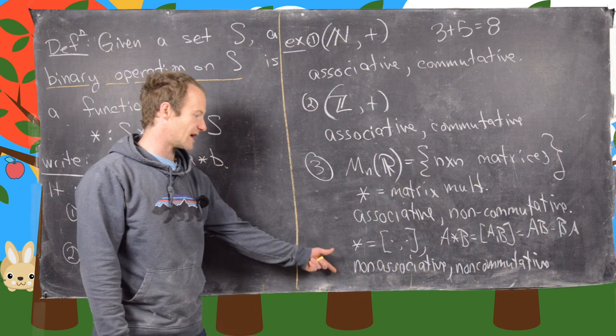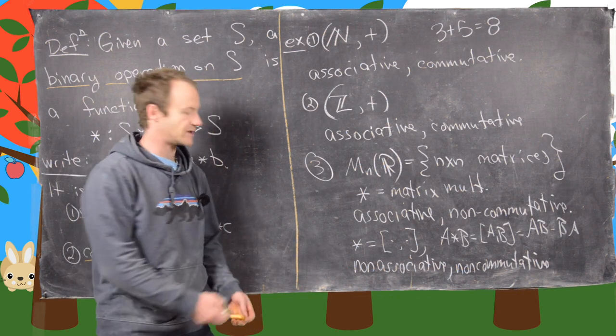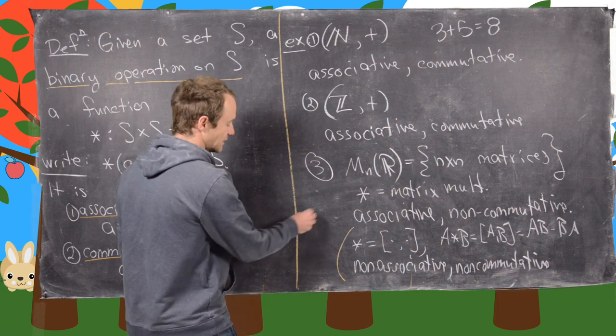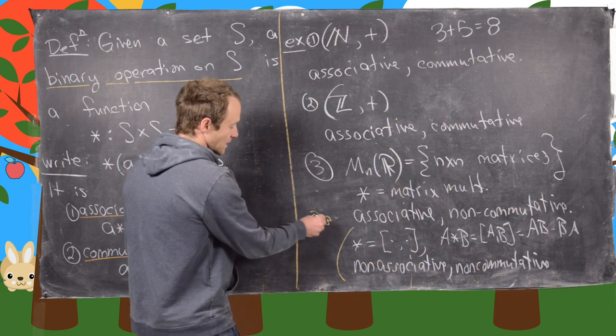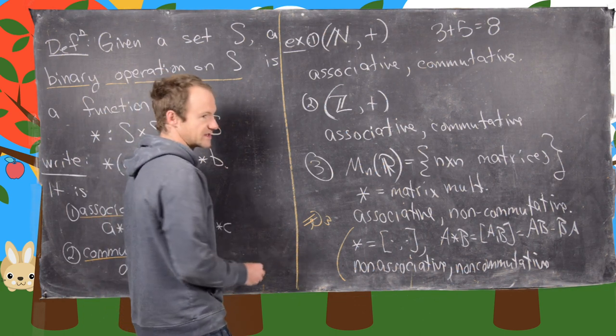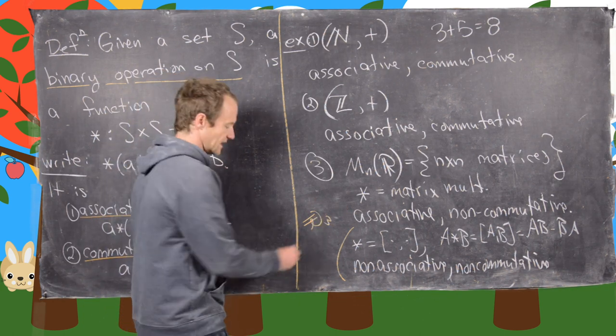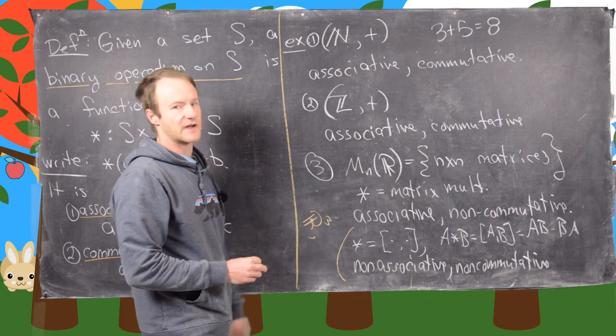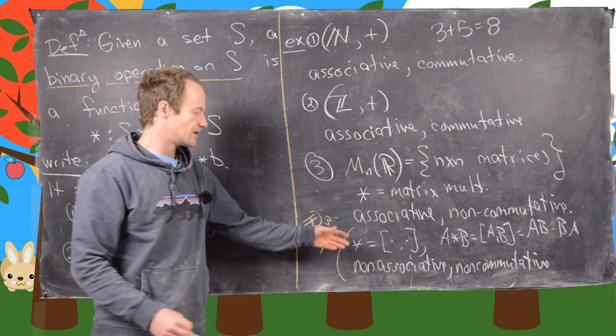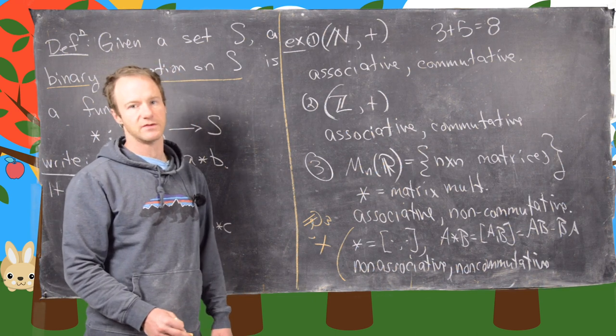And in fact, there's another example of this third case down here. We could also have something that's non-associative and non-commutative given by R³. So in other words, three dimensional vectors with entries in R, and then the normal cross product. So that's non-associative and non-commutative.